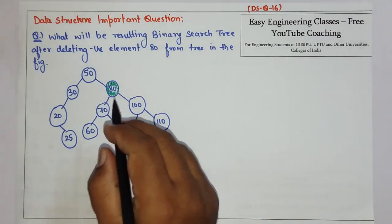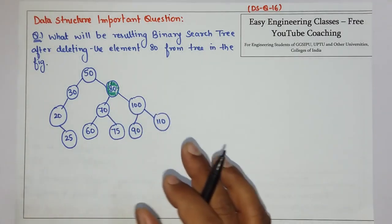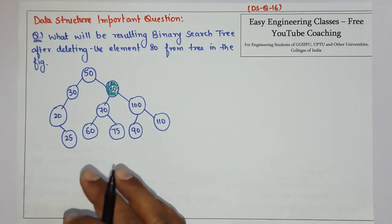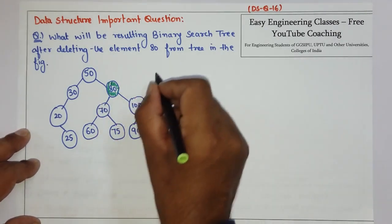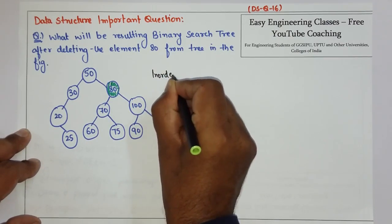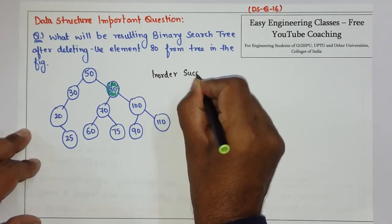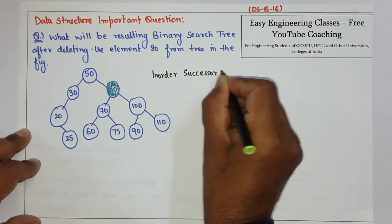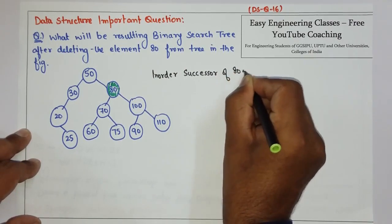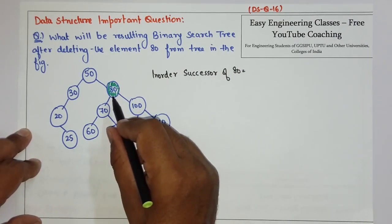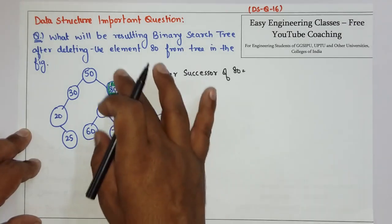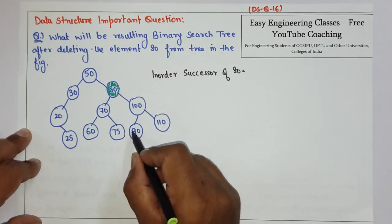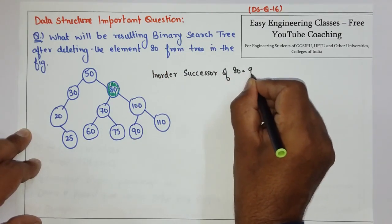Now, the inorder successor of any given node is the leftmost child of the right subtree. Which means the inorder successor of 80 will be the leftmost child of the right subtree. The leftmost child of this particular right subtree is 90, so the inorder successor of 80 is 90.